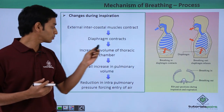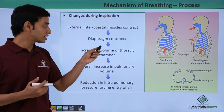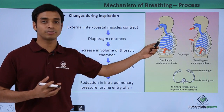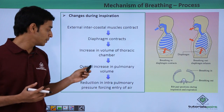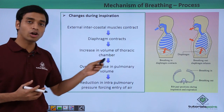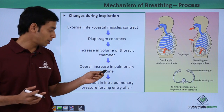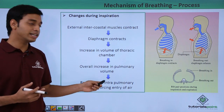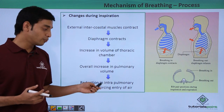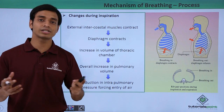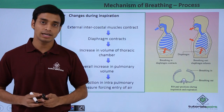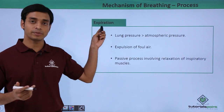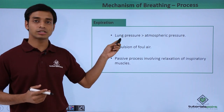Because of the rib movement outward and the diaphragm becoming flattened, the volume of the thoracic chamber increases. Since the thoracic volume increases, the overall pulmonary volume also increases. This results in a reduction in intra-pulmonary pressure, which forces outside air to rush through the nostrils into our lungs.